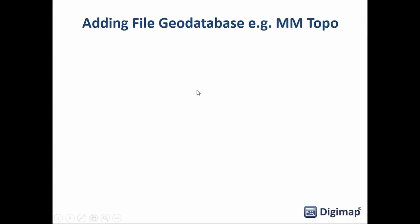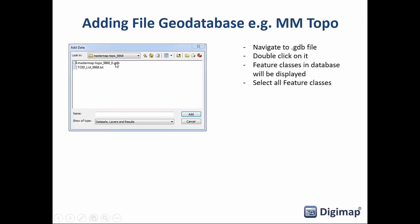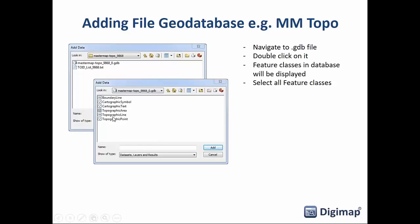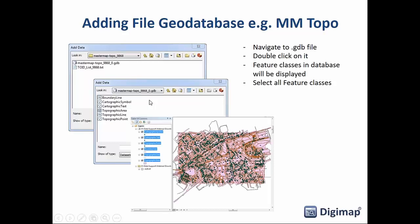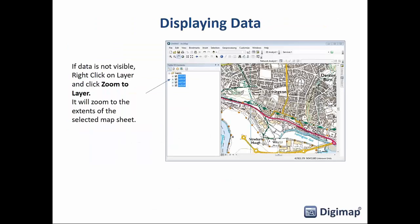To add a file geodatabase such as MasterMap Topo, navigate to the geodatabase and open it by selecting it. This time you've got a few feature classes within it — select all of those and you'll end up with your MasterMap data loaded in ArcGIS. Again, it will appear without any cartographic representation at first, but all the data is there.